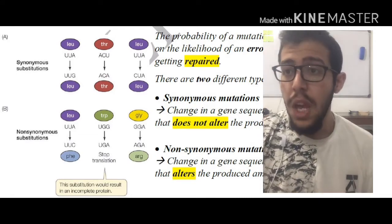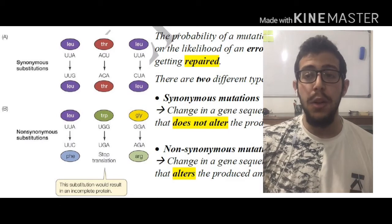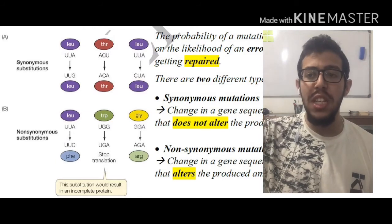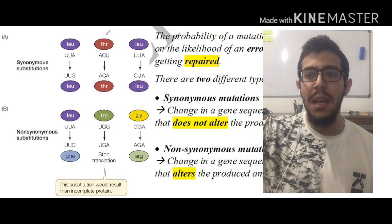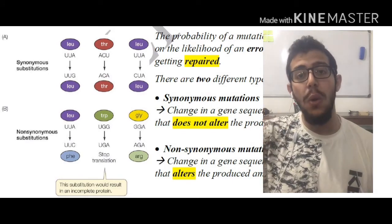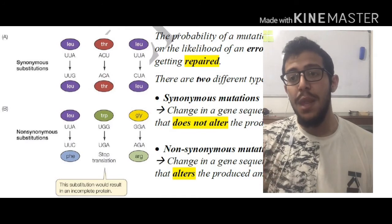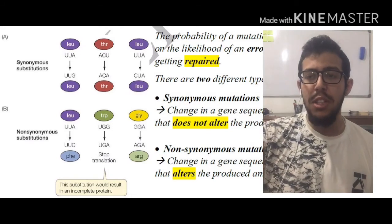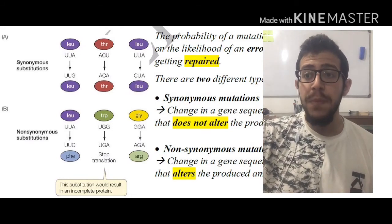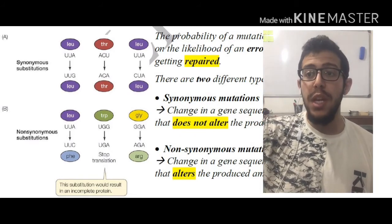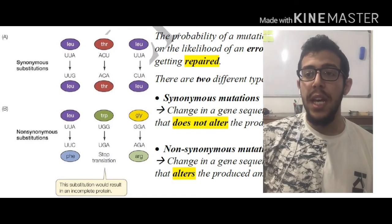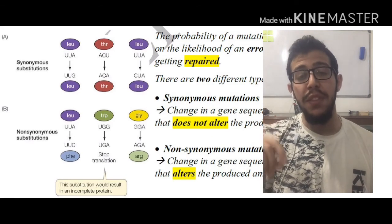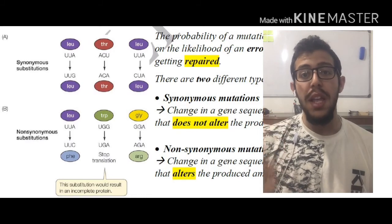Looking at the non-synonymous substitutions, we have leucine coded by the codon UUA, and phenylalanine coded by UUC. Simply changing the adenine to cytosine results in a different amino acid, which will later alter the entire protein. There's another problem that might be even worse: tryptophan is coded by UGG, and we know that UGA is a stop codon. So the G at the end of the tryptophan codon could change to A, causing termination of translation, which could also be detrimental for a certain protein.